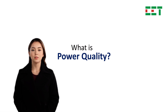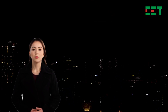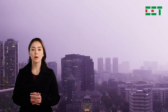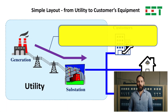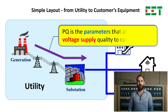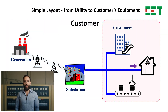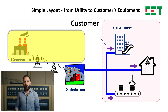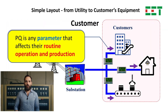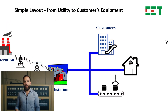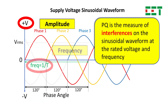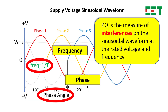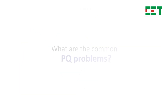Poor power quality is both dangerous and costly. But what is power quality, Mr. ZD? Well, from the utility perspective, PQ refers to the quality of the voltage supplied to customers. For customers, PQ is any electrical issue that disrupts operations, and technically, PQ measures interferences in the sinusoidal voltage wave at rated voltage and frequency.